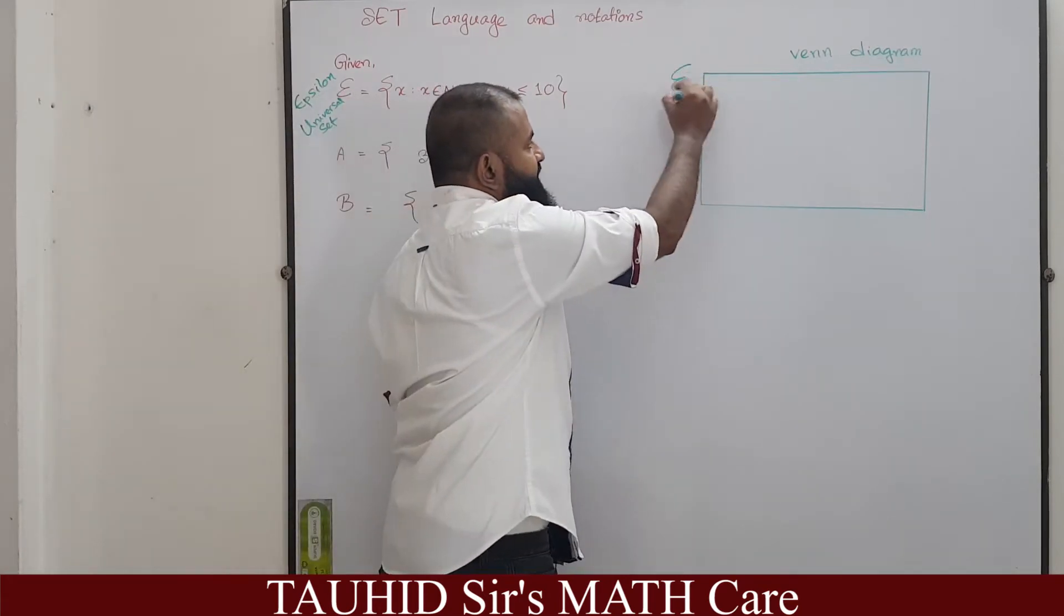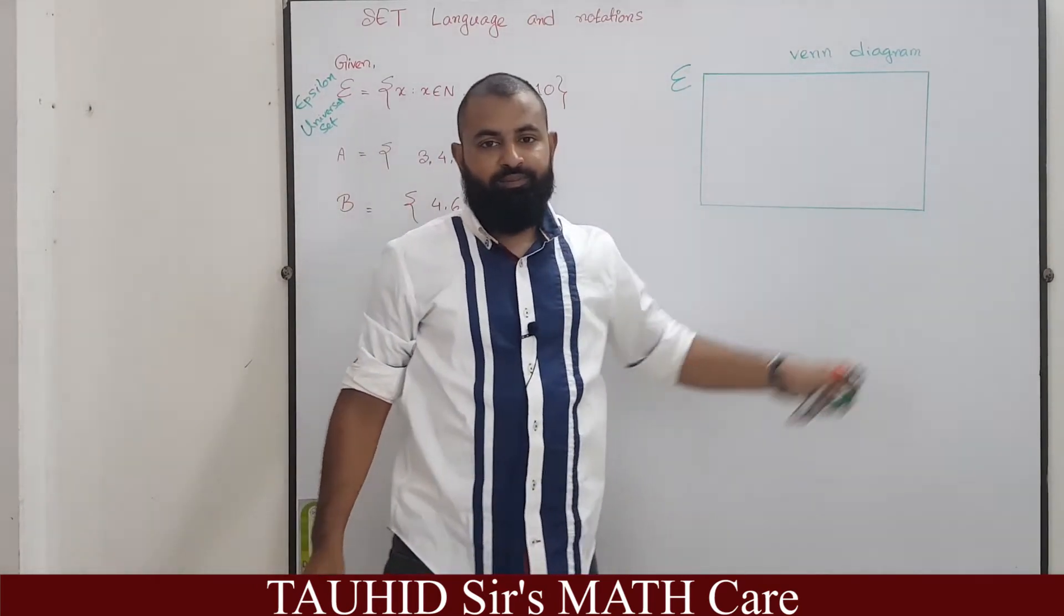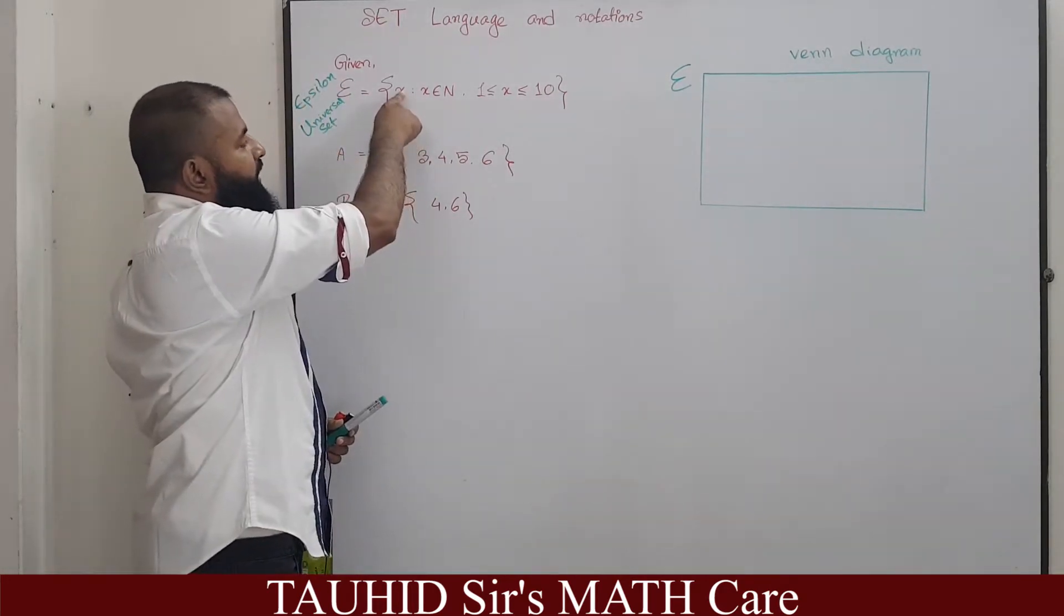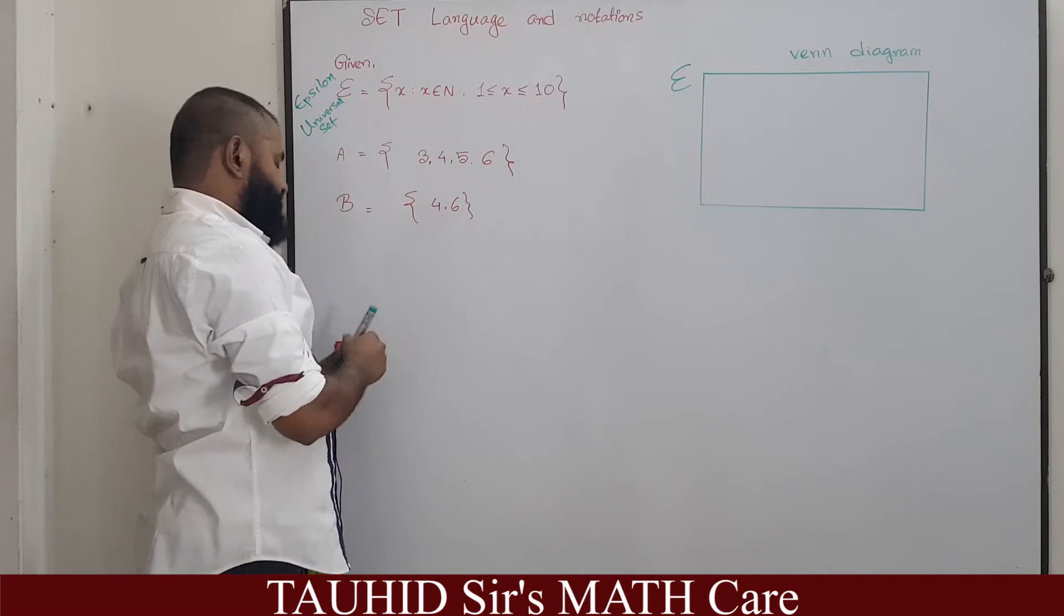In Venn diagram a universal set is denoted by a rectangle and here we are pronouncing x such that, this is pronounced here as such that.